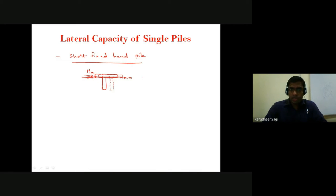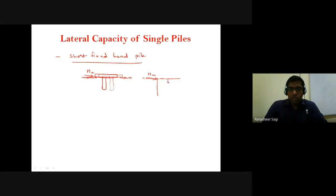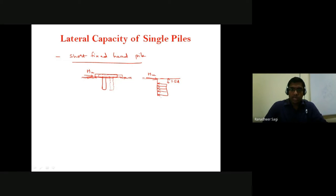If I look at how the earth pressure distribution diagram is going to be along the depth of the pile: at the pile cap, the HU force is applied and transferred to the pile head. According to Broms, over a depth of 1.5 times the diameter of the pile, we neglect the effect of earth pressure transferred from the adjacent soil. Beyond that depth, over the remaining pile length, because the entire remaining portion of the pile is translating in the forward direction, the earth pressure magnitude is equal to 9CU.